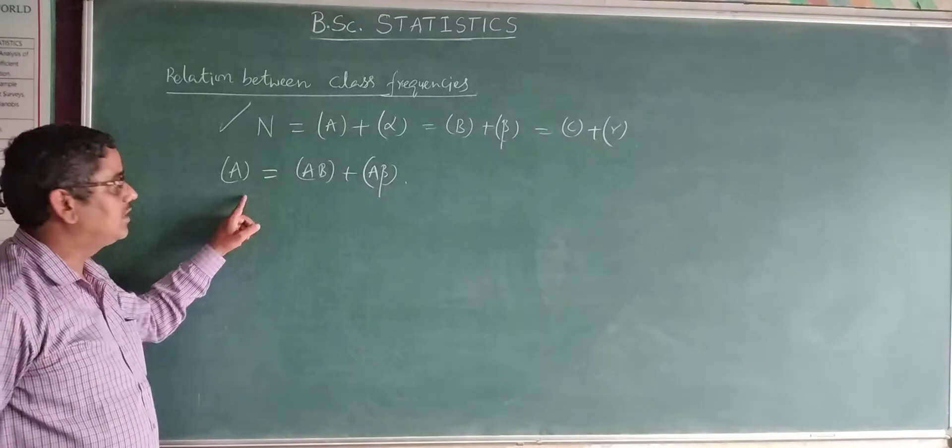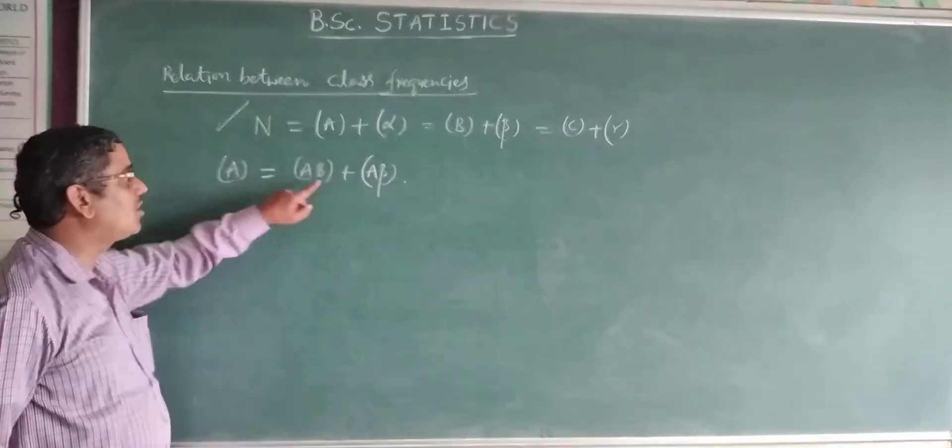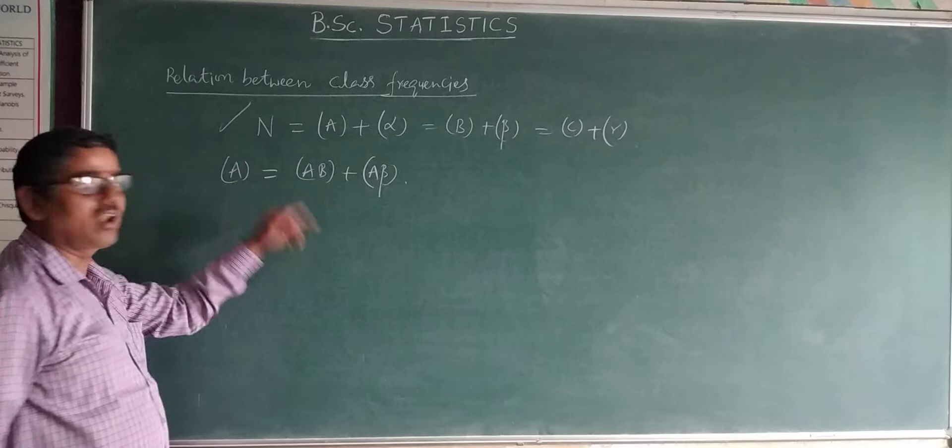A is literacy. B is drinking. Literate drinking, literate not drinking will give literate. That's the relation between them.